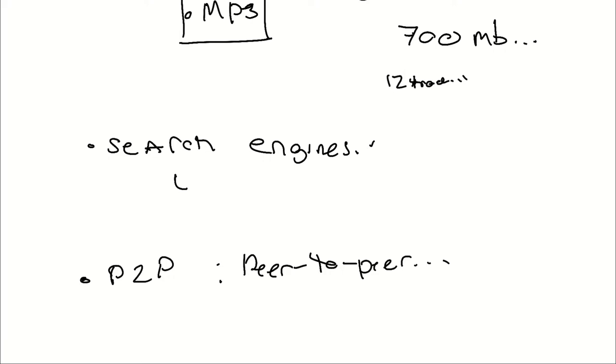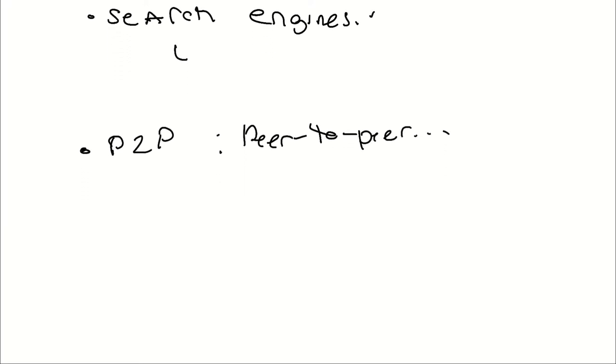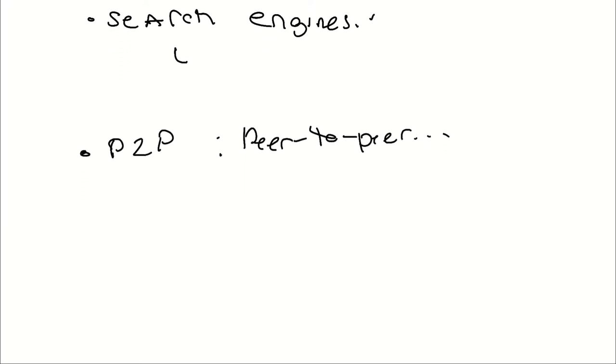Other things of course include the internet becoming faster. More and more people started with dial-up, then DSL, and eventually cable internet — the faster internet means you can download files a lot faster, transfer files, and do video streaming.